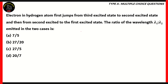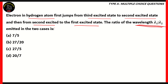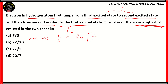Now let's look at the final question. An electron in a hydrogen atom first jumps from the third excited state to the second excited state, and then from the second excited state to the first excited state. The ratio of wavelengths lambda-one to lambda-two emitted in the two cases is what? The third-to-second transition is lambda-one, and second-to-first is lambda-two. To compare wavelengths, we use the formula for wave number.